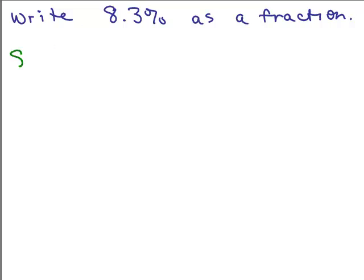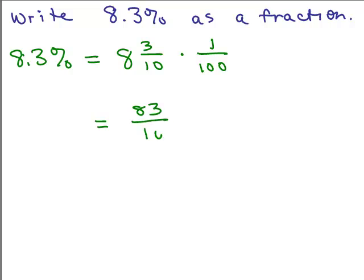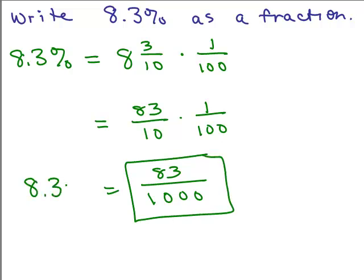So we're going to start off with 8.3 percent, and you can write that as just 8 and 3 tenths. 8.3 could be written as 8 and 3 tenths. And then with the percent sign, we could change that to 1 over 100. Now 8 and 3 tenths, well, the 3 tenths cannot be reduced. So if I change that to an improper fraction, we have 10 times 8 plus 3. That's 83 tenths times 1 over 100. Nothing cancels and there's your answer. 83 over 1,000. So 8.3 percent equals 83 over 1,000.